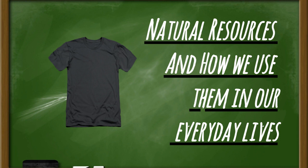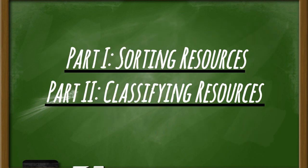Let's look at how we're going to explore these different natural resources in our stations today. Our exploration is a two-part activity. Part one is sorting the resources, where you'll explore and identify natural materials used to make common everyday items. Part two is classifying the resources, where you'll classify objects according to the types of materials they are made out of.